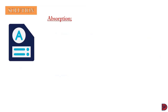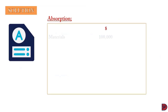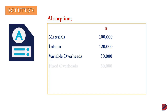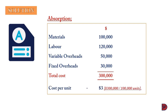For the solution under absorption costing, we start with materials $100,000, labour $120,000, variable overheads $50,000, and fixed overheads $30,000. We are adding every cost that comes into play. The total is $300,000. Because there were 100,000 units produced, the cost per unit will be $3 — that is the total cost divided by the total output units produced.